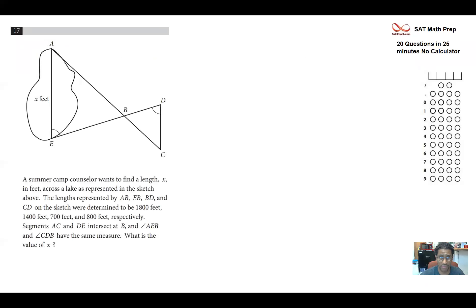This is our first geometry question in this set of 20 here. We have these triangles with some things marked off. AB is this guy here, and we're told that is 1,800. EB is this guy here, 1,400. Next up is BD, that's 700. And finally, there's CD, that's 800. So we mark up the figure.